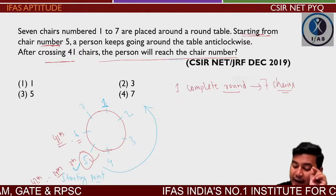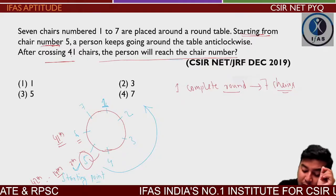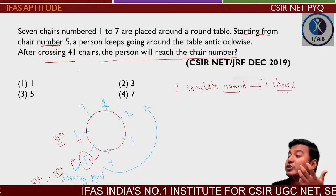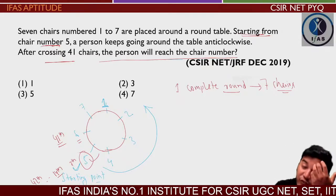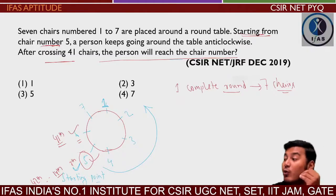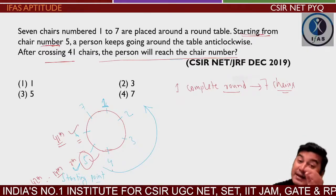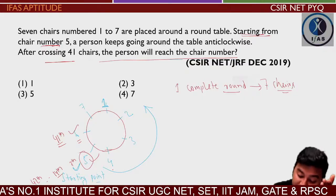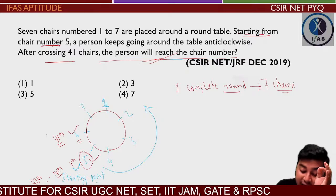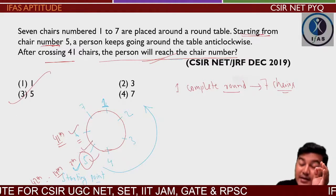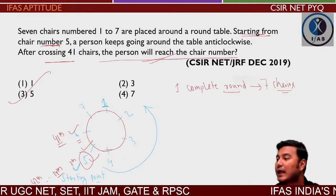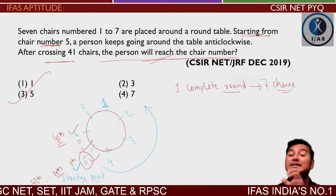But look very carefully at the question — the person will reach the chair number after crossing 41 chairs. That means they have already crossed chair number 6, and after crossing it, they reach chair number 5. So the answer is chair number 5. Very good, Shital — you got it correct.